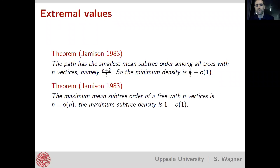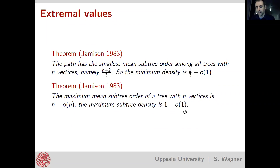At the other end, Jamison proved that the maximum mean subtree order is quite close to what is theoretically conceivable — close to the total number of vertices, so one can get n minus o(n). Therefore the maximum subtree density is 1 minus o(1), meaning that as n goes to infinity, the maximum subtree density among trees with n vertices converges to one. It is not easy to say exactly what that maximum is, and I will get to that later.